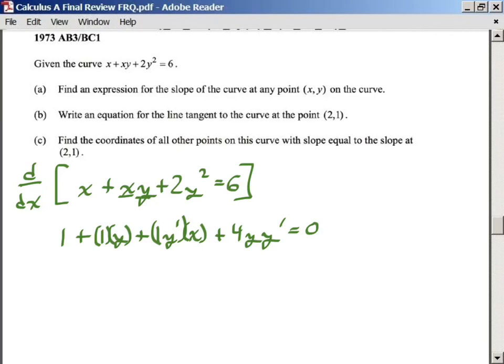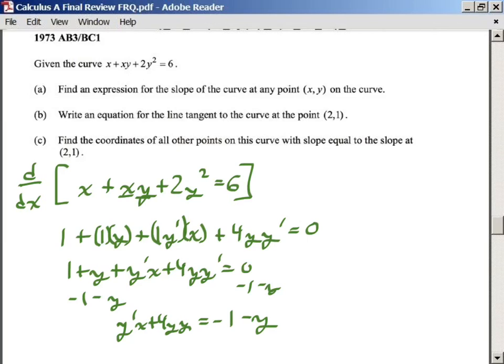Derivative of any constant is 0. Now our goal is to get y prime alone. So this would be 1 plus y plus, just cleaning it up, y prime x plus 4y y prime equals 0. So let's get these guys to the other side. They don't have a y prime with them. So we're going to subtract 1, subtract y, to get negative 1 minus y.